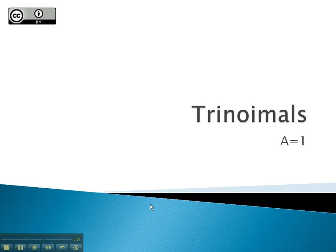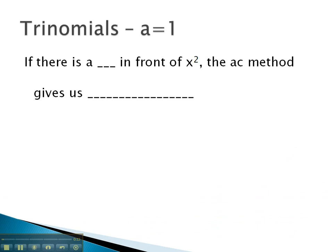In this video, we will look at factoring trinomials in the special case where a is equal to 1. In other words, there will be no number in front of the x squared. Technically, it would be a 1 if there is a 1 in front of the x squared.